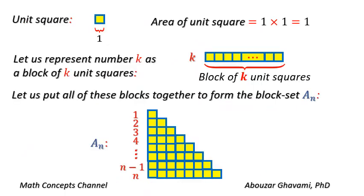A unit square is a square with each side equal to 1 unit. The area of a unit square equals 1 unit times 1 unit, that is equal to 1 unit square.